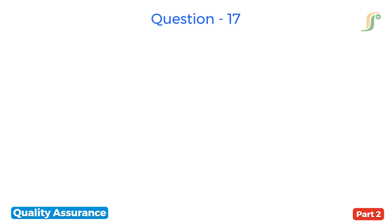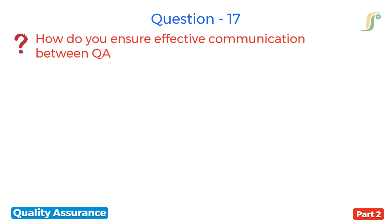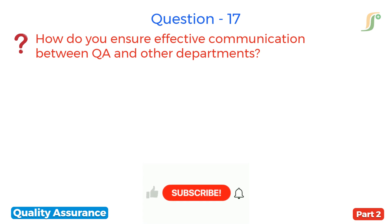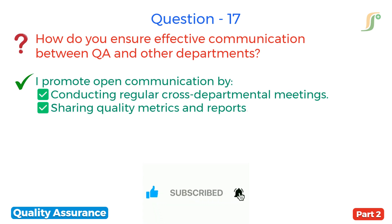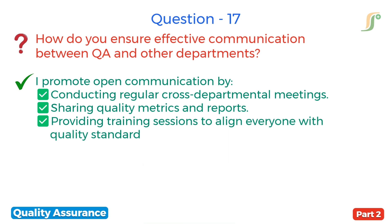The seventeenth question is: how do you ensure effective communication between QA and other departments? I promote open communication by conducting regular cross-departmental meetings, sharing quality metrics and reports, and providing training sessions to align everyone with quality standards.